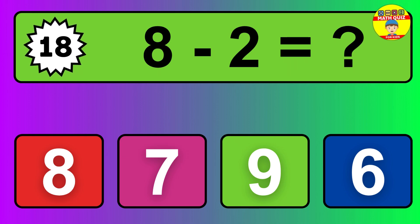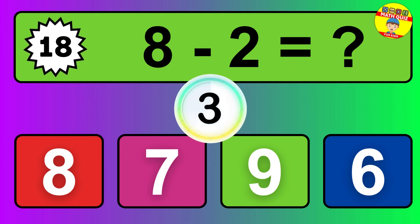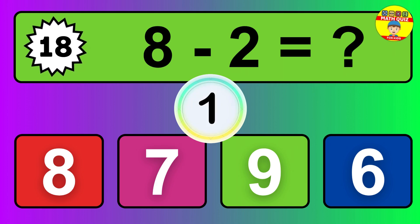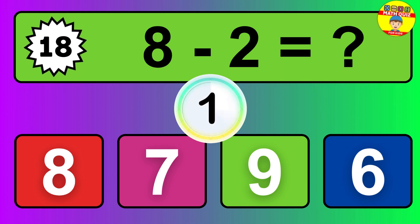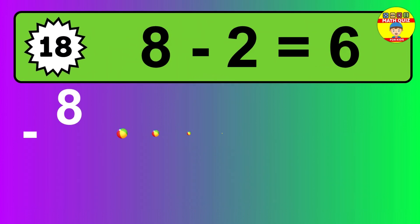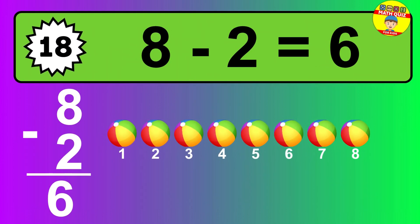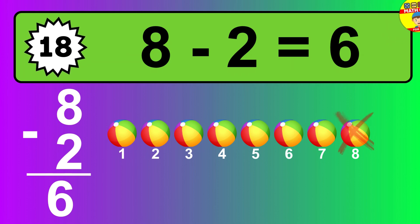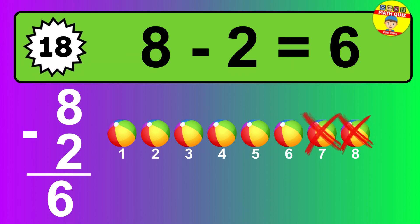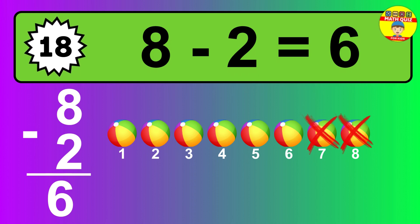Question 18. 8 minus 2 equals what? The answer is 8 minus 2 is 6. Let's count it: 1, 2, 3, 4, 5, 6.